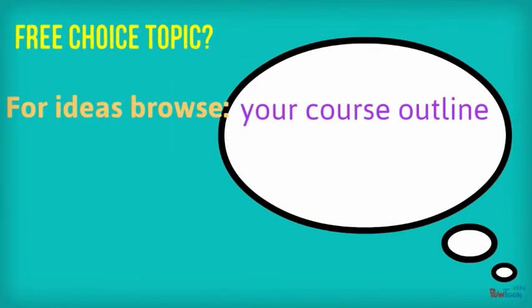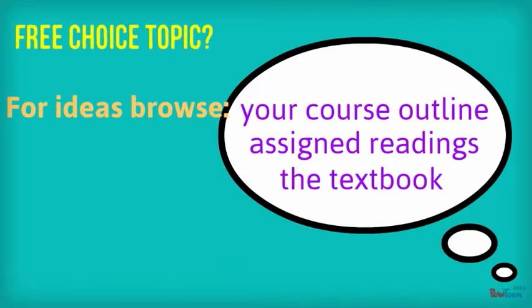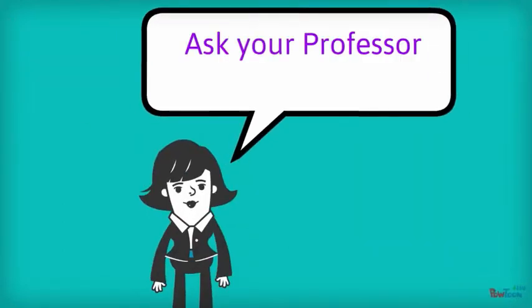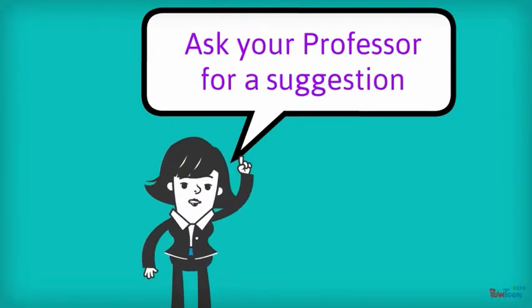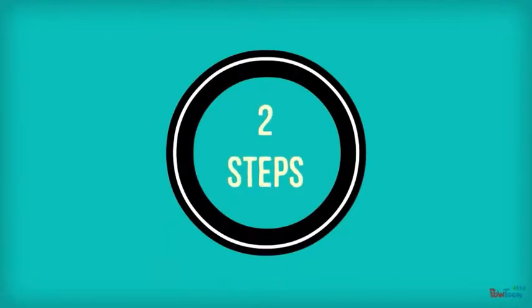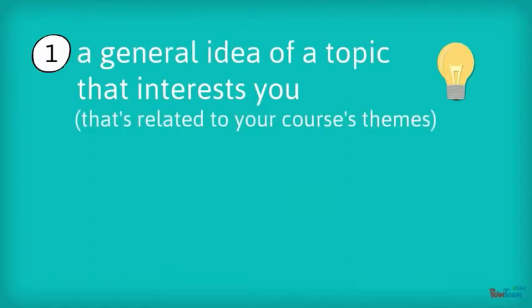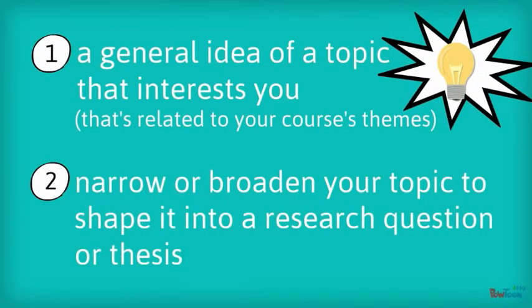You get to choose your own topic? Great! For ideas, you can browse your course outline, assigned readings, or the textbook. You can also ask your professor for a suggestion. There are two steps to defining your own topic. First, think of a general idea of a topic that interests you — it should be related to your course's themes. Then you'll narrow or broaden your topic and shape it into a research question or thesis.